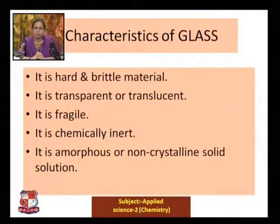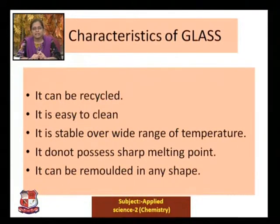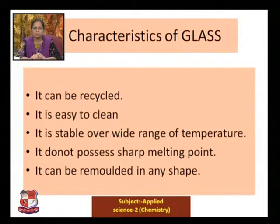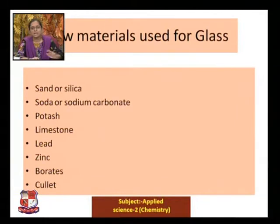Glass is an amorphous or non-crystalline solid solution. Glass can be recycled. Glass is easy to clean. It is stable over a wide range of temperatures depending on the components added. Importantly, glass does not possess a sharp melting point — that is why it is called a super cooled liquid. It can be remolded into any shape. These are the characteristics of glass.